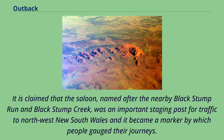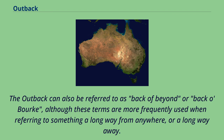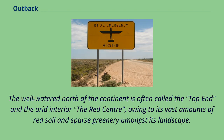It is claimed that the saloon, named after the nearby Black Stump Run and Black Stump Creek, was an important staging post for traffic to northwest New South Wales, and it became a marker by which people gauged their journeys. The 'never-never' is a term referring to the remoter parts of the outback. The outback can also be referred to as 'back of beyond' or 'back of Bourke', although these terms are more frequently used when referring to something a long way from anywhere. The well-watered north of the continent is often called the Top End and the arid interior the Red Centre, owing to its vast amounts of red soil and sparse greenery.